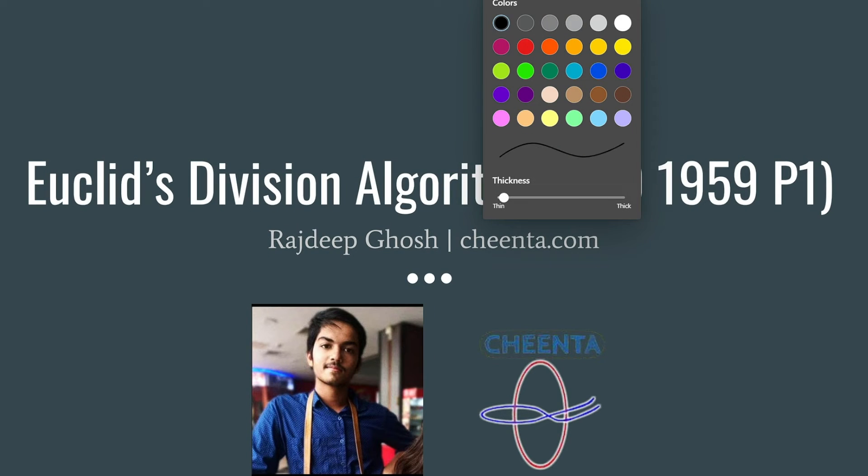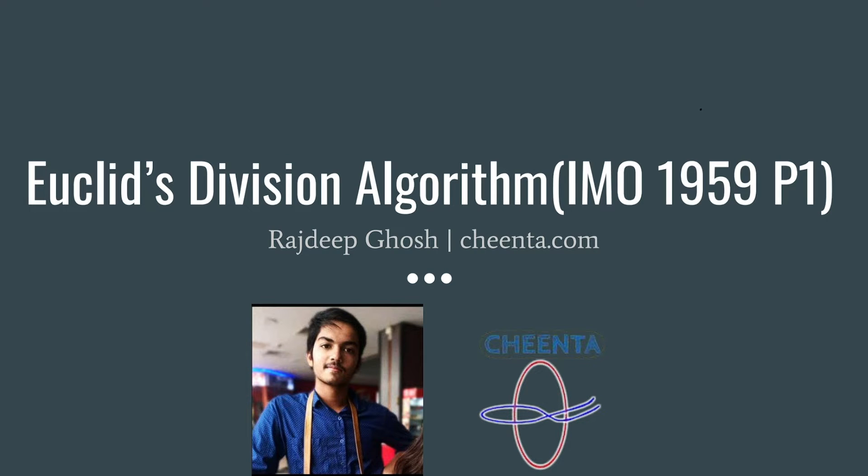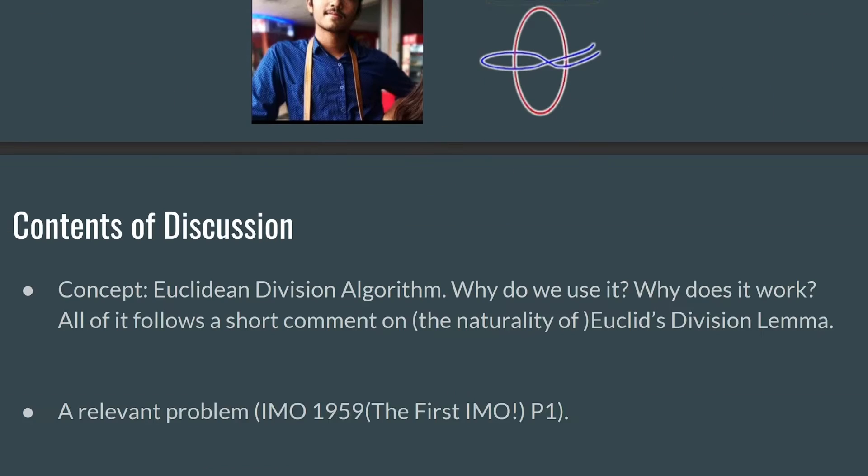Hello, everyone. Welcome to another video by Cheenta.com. I'm Rajdeep Ghosh. Today's video will be on Euclid's division algorithm. The problem that we'll center around will be IMO 1959 P1. This will be part of a series that I will be covering. It will comprise of all topics that fall under the Olympiad and ISICMI entrance syllabus. And I'll slowly try to cover the entire course.